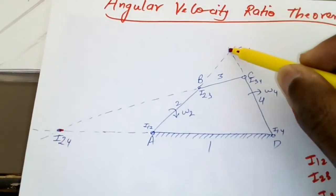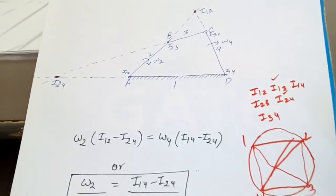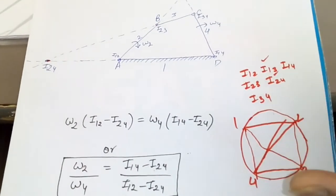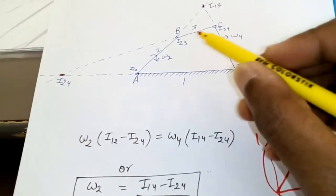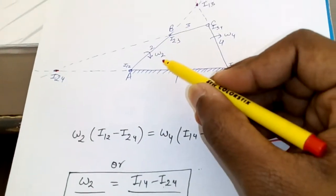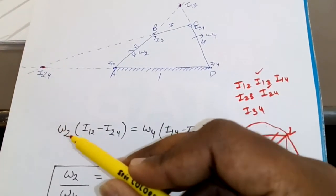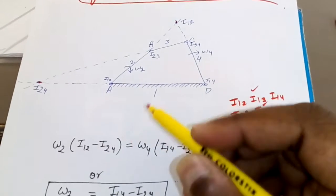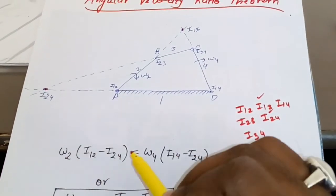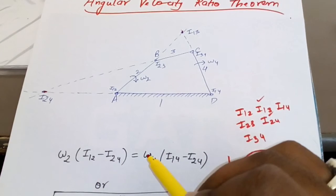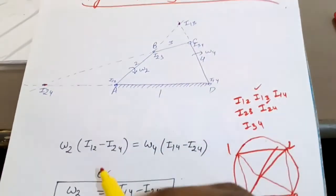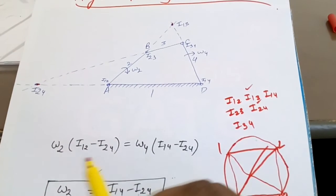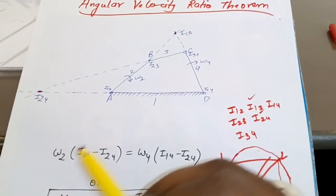Now you have found both i13 and i24, so all the I-centers are known. The angular velocity ratio theorem states: suppose you have to find omega 4 and omega 2 is known. You write omega 2 on the left-hand side equal to omega 4, and then apply the trick for writing the I-center distances.